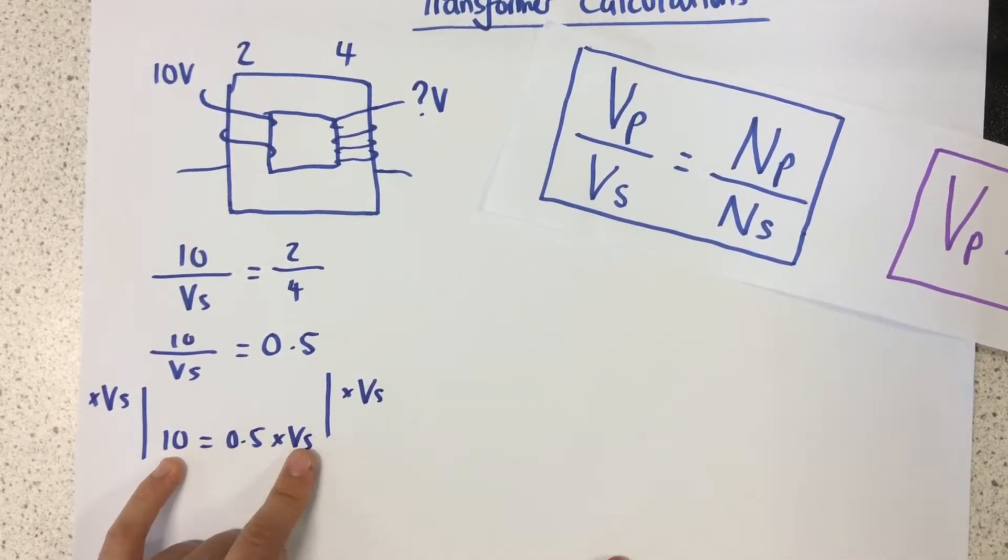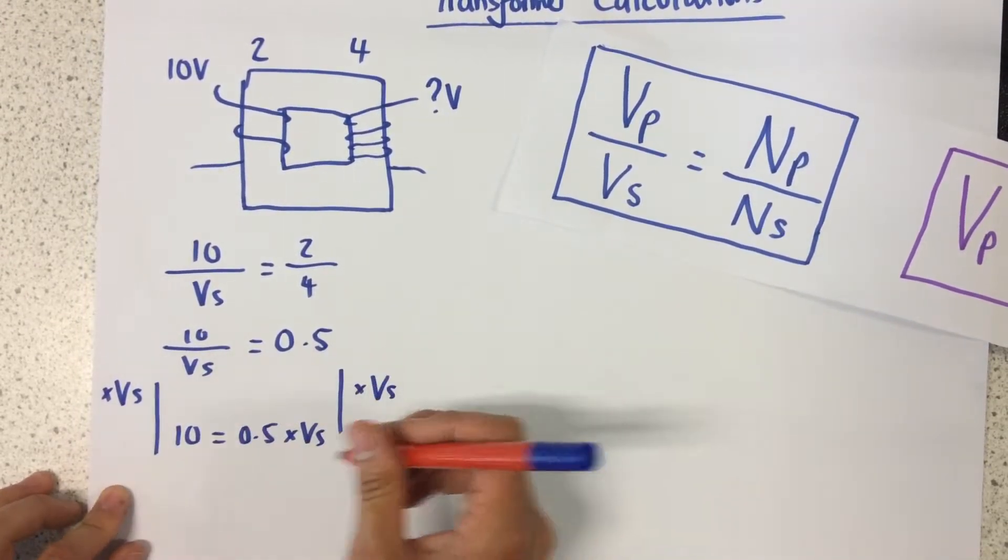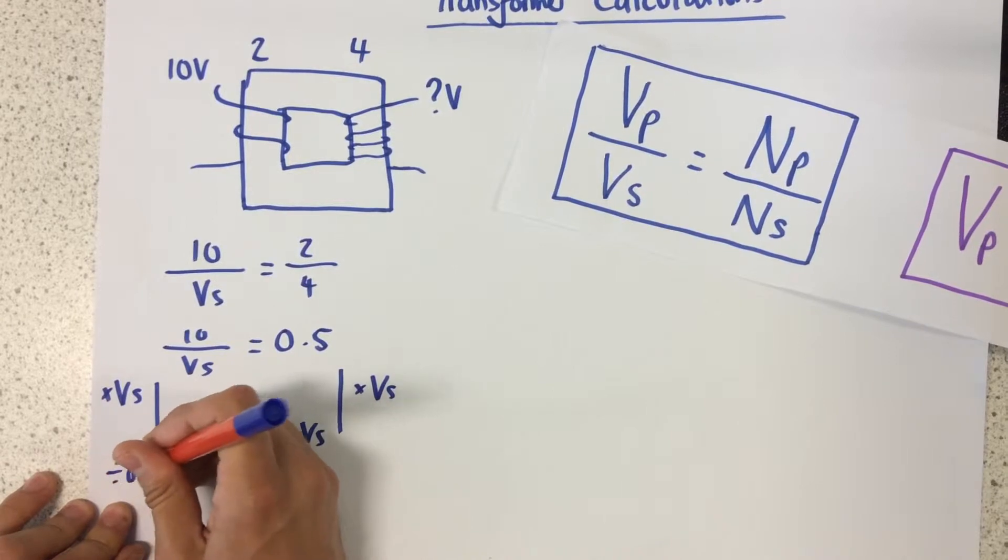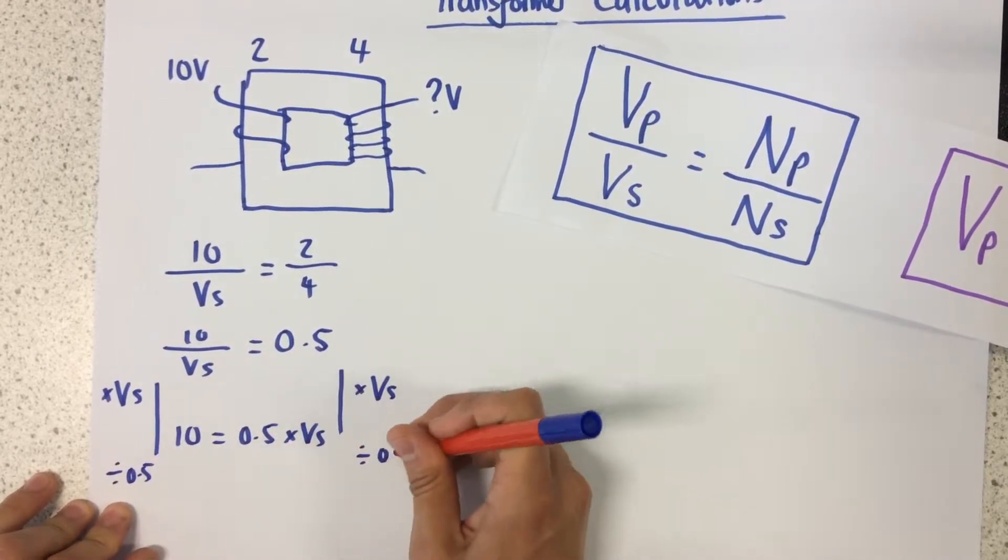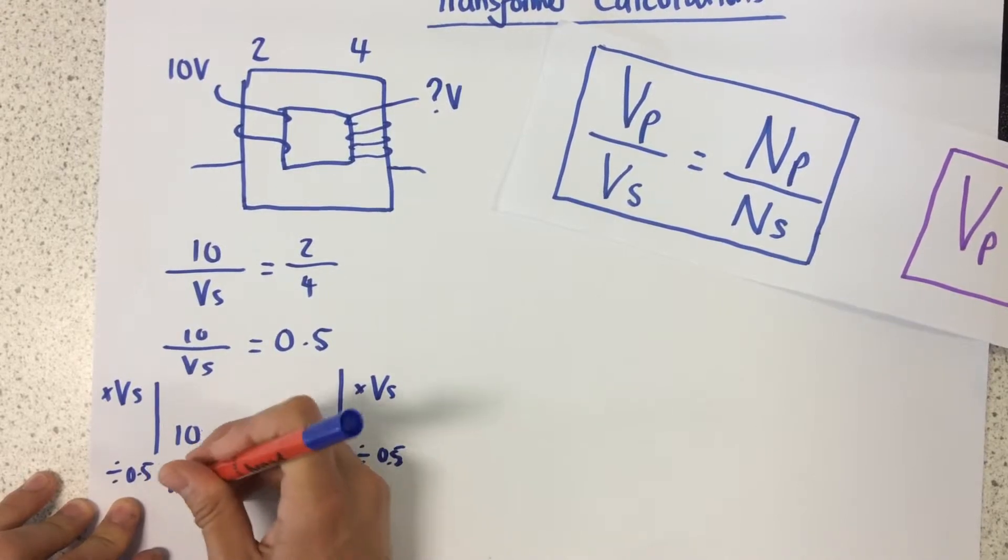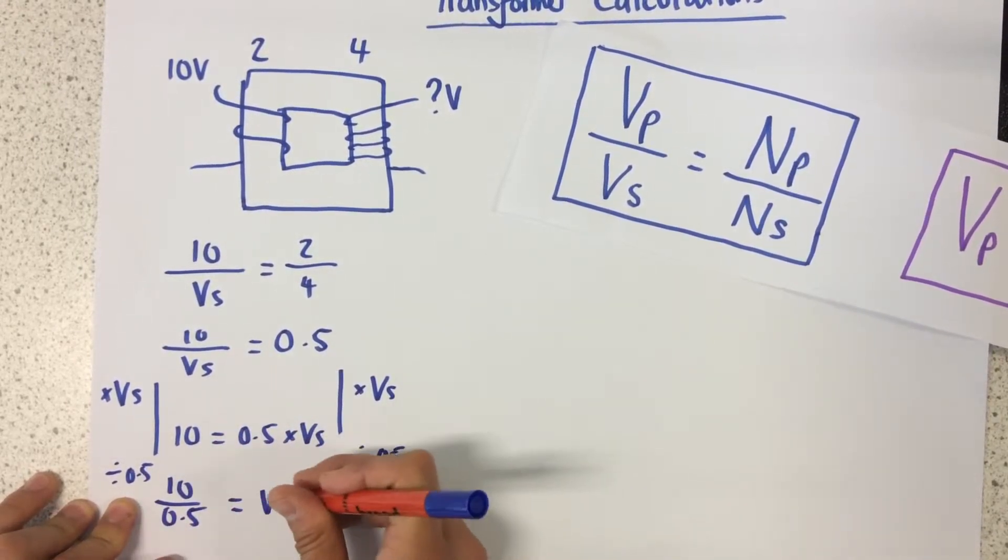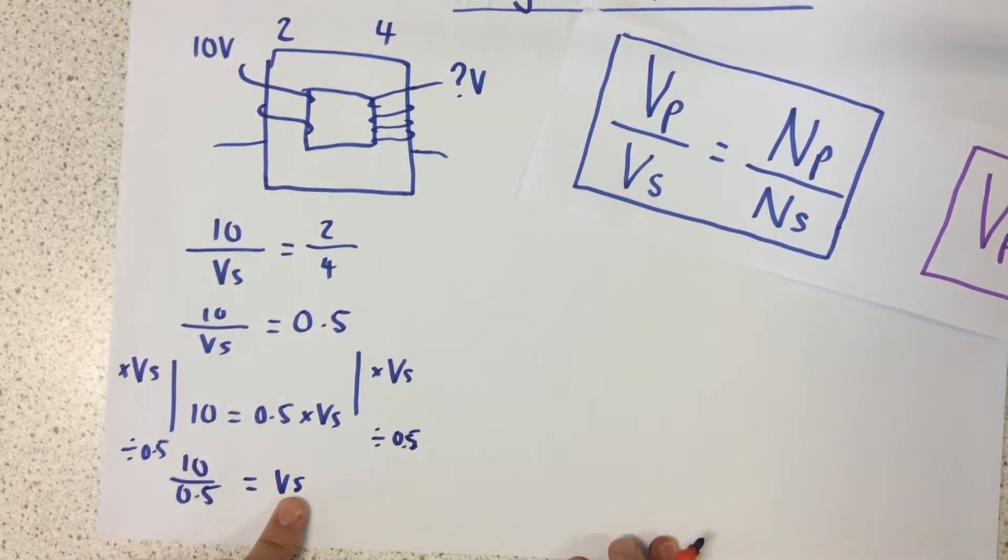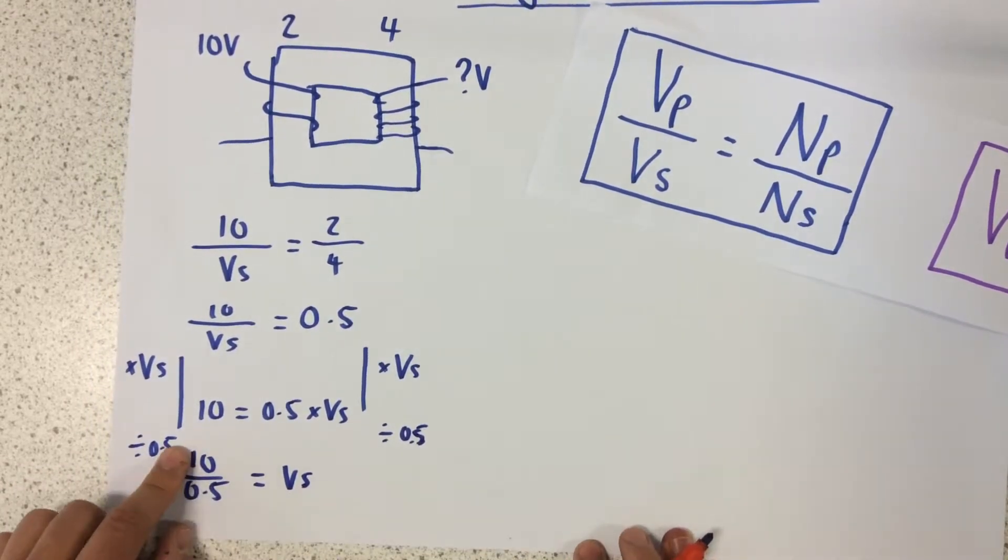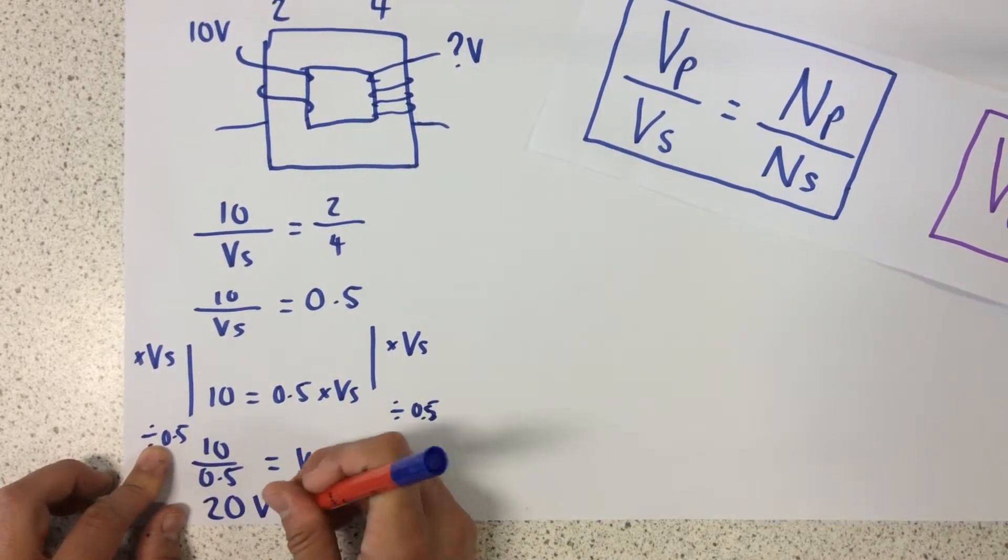So I now want to get Vs all by itself, so I'm now going to divide both sides by 0.5. So if I divide that side by 0.5, and I divide that side by 0.5, I now have 10 divided by 0.5 equals Vs. So remember that's the voltage at the secondary. So 10 divided by half is 20 volts.